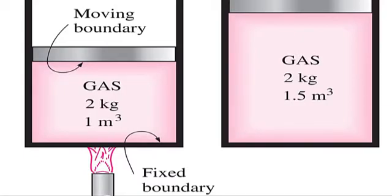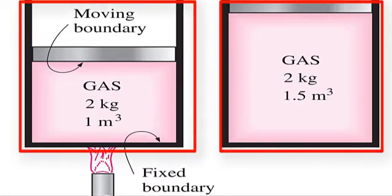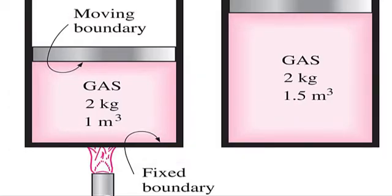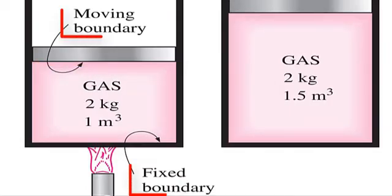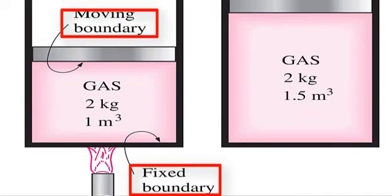Consider the piston cylinder device. Let's say that we would like to find out what happens to the enclosed gas when it is heated. Since we are focusing our attention on the gas, it is our system. The inner surfaces of the piston and the cylinder form the boundary, and since no mass is crossing this boundary, it is a closed system.